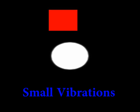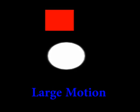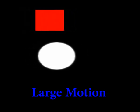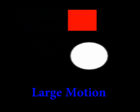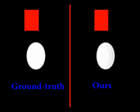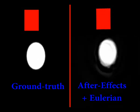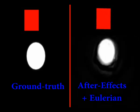We now present our experiments in controlled environments. We generate this sequence by adding a small vibration to a white circle, then add a global motion and process the resulting sequence using different magnification techniques. Our technique resembles the ground truth magnification. Note that some artifacts here are generated by the video compression. After Effects generates poor stabilization, which leads to strong blurring artifacts.